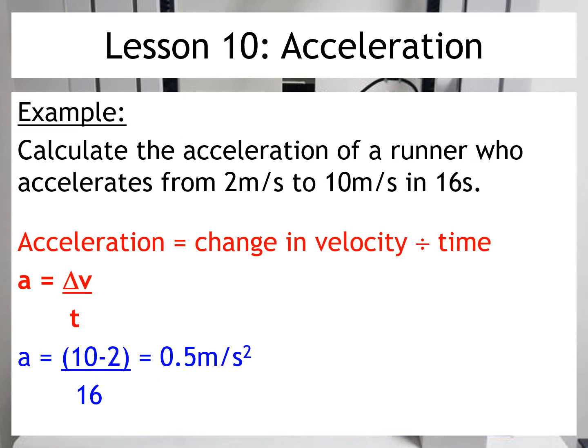So let's look at an example. Here we're asked to calculate the acceleration of a runner who accelerates from 2 metres per second to 10 metres per second in 16 seconds. So just going to highlight our key data here. 2 metres per second is the starting velocity. It ends up at 10 metres per second and the time taken is 16 seconds.